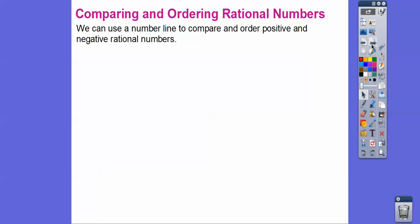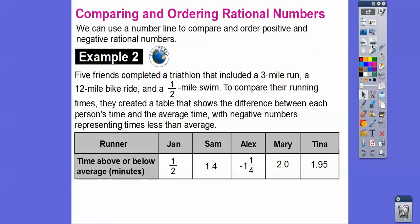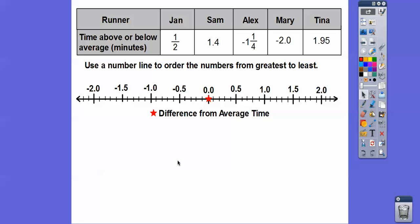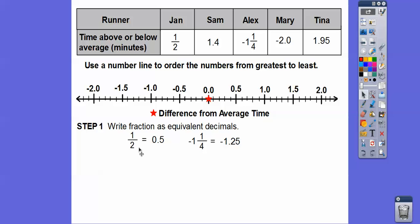We can use a number line to compare and order positive and negative rational numbers. Five friends compete in a triathlon including a 3-mile run, a 12-mile bike ride, and a 1.5-mile swim. They created a table showing the difference between each person's time and the average time, with negative numbers representing less than average. It looks like Mary did the best, Alex second best, and Tina was a bit slowest. We're going to use a number line to order the numbers from least to greatest. We'll convert the fractions to decimals: 1 half is 0.5, and negative 1 and 1 fourth is negative 1.25.